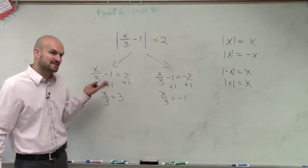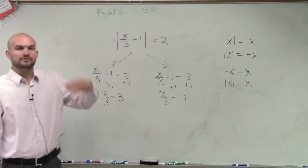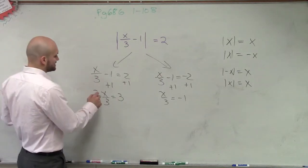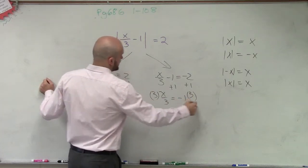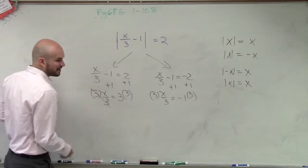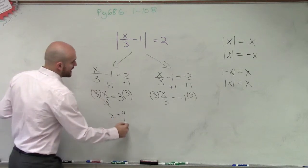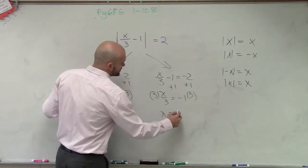Now remember, since my variable is now being divided by 3, the inverse operation of dividing is to multiply by 3. And you can kind of do this at the same time. So therefore, that divides to 1. So x equals 9. In this case, x equals negative 3.